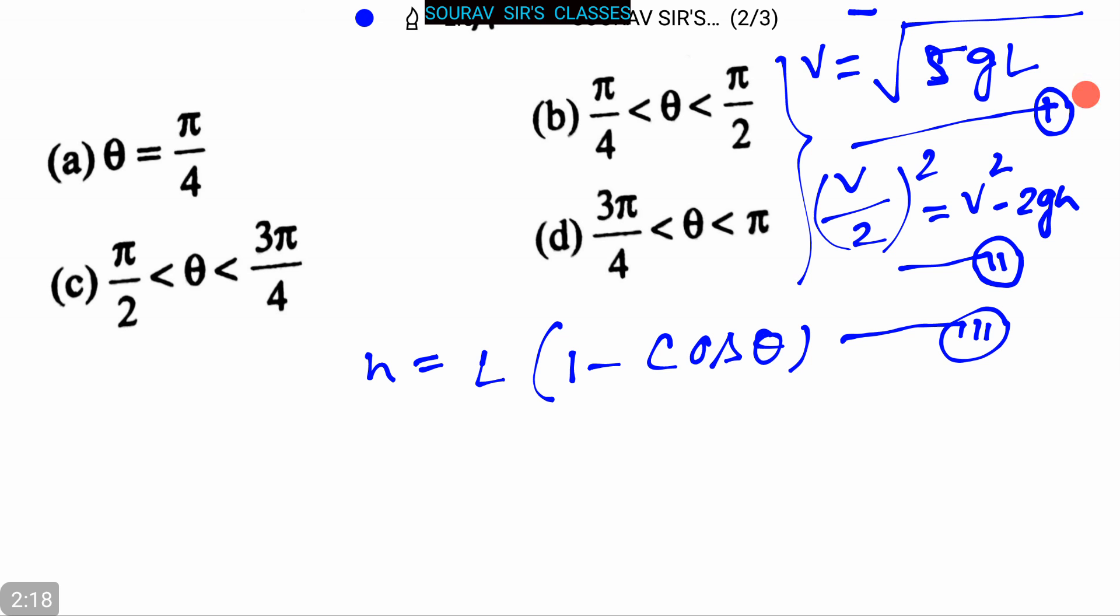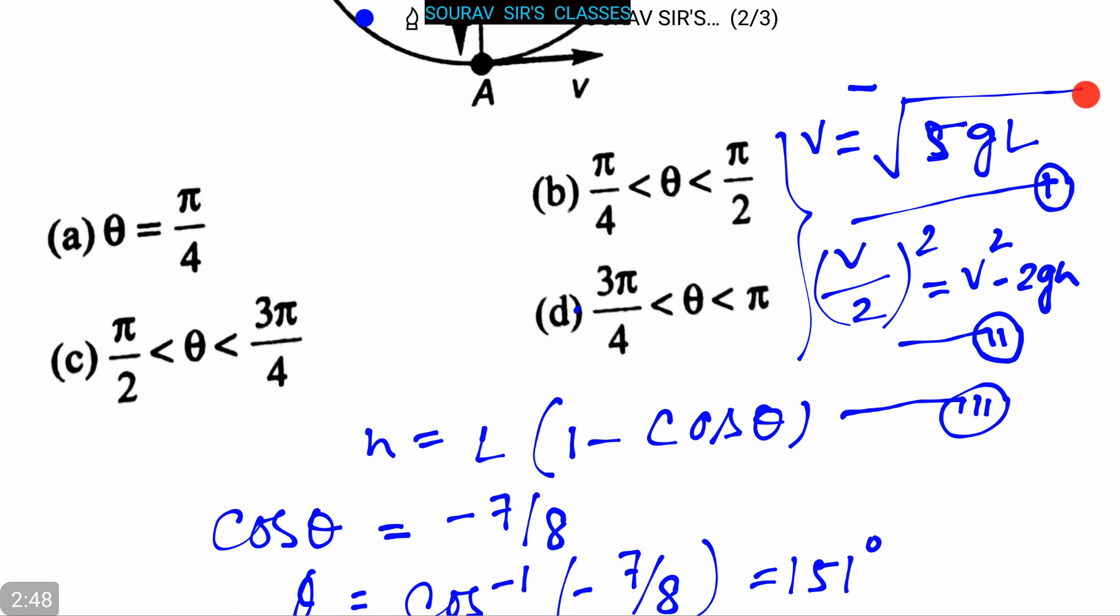So now solving equations 1, 2, and 3, we can get that cos theta is equal to minus 7 by 8. Theta is equal to cos inverse minus 7 by 8, that is 151 degrees. So here option d, that is 3 pi by 4 less than theta less than pi, is our correct answer.